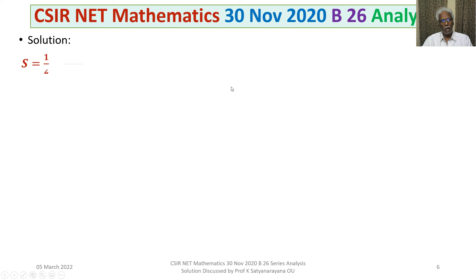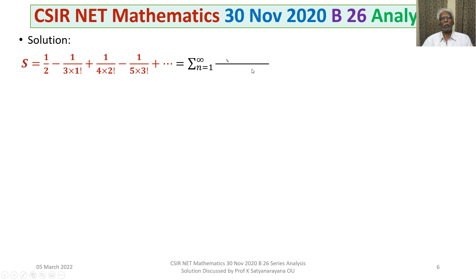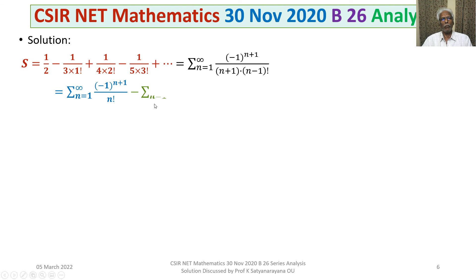We have written the expression in sigma notation, manipulated it, and obtained the difference of two series. The first series is sigma n equals 1 to infinity of minus 1 to the power of n plus 1 divided by n factorial.